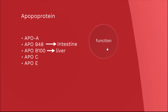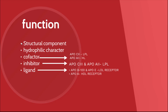The function of apoprotein is a very important exam question. They act as structural components of lipoprotein and maintain its structural stability. They give a hydrophilic character to the lipoprotein particles to help their transport in the aqueous plasma. They also act as cofactors for enzymes — for example, Apo C2 activates lipoprotein lipase enzyme, and Apo A2 activates hepatic lipase enzyme. Some apolipoproteins act as inhibitors of enzymes: Apo C3 and Apo A2 act as inhibitors of lipoprotein lipase. So Apo C2 is the activator of lipoprotein lipase, while Apo C3 and Apo A2 are inhibitors of lipoprotein lipase.